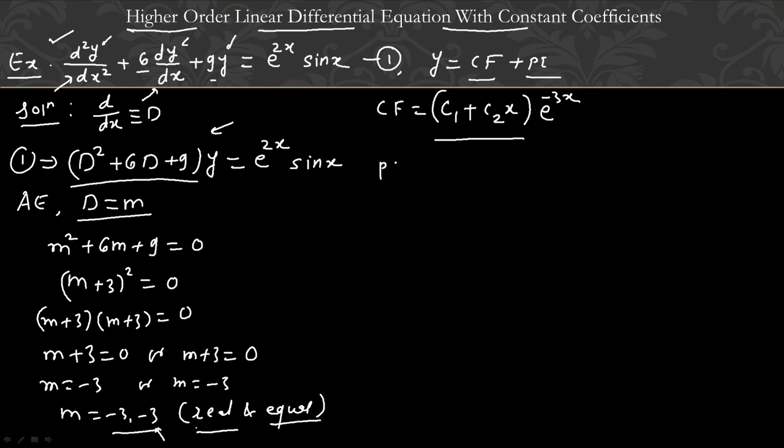Now we take PI. PI is also easy here. PI formula is 1 upon function of D. Function of D is D squared plus 6D plus 9. And here is e to the power 2x into sin x. This is the right hand side we have. Here is an exponential function and sine function, the product of two functions.